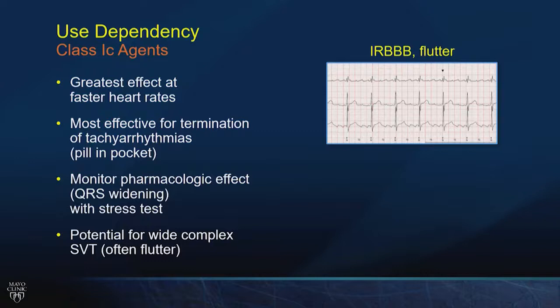This is also why you can see a wide-complex supraventricular tachycardia in people treated with flecainide. If somebody is in AFib, you give them pill-in-the-pocket flecainide, it organizes their AFib into atrial flutter. Because they're on flecainide, that flutter isn't as fast as typical flutter, so it may conduct 1-to-1 to the ventricle instead of 2-to-1 — their rate might be 225 or even 280. Not only that, at a ventricular rate of 280, they get use-dependent effect on the ventricular myocardium and the QRS widens. We call this a 'fleca-flutter' — it looks like VT and can cause syncope.